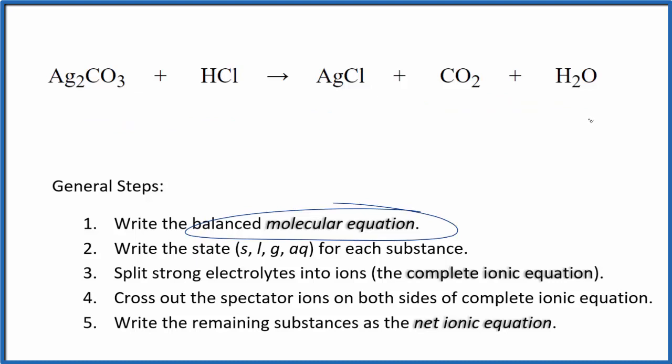This is the molecular equation here. I have two silvers and just one here. Let's put a two right here. Now I have two silvers. I have two chloride ions here. Put a two here. That looks like that balances our equation. So the molecular equation is balanced.